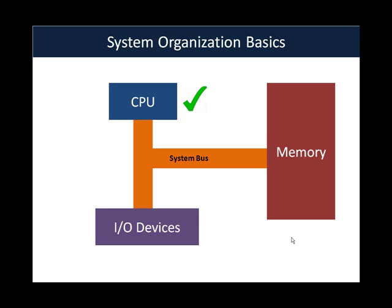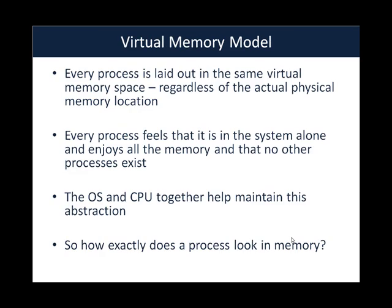We've covered the CPU in enough detail to begin programming. Now let's look at memory. The first thing one needs to understand is the virtual memory model. Whenever any program is executed, it is overlaid as a process in memory. Every process gets laid out in the same virtual memory space, regardless of the actual physical location of that process in RAM.